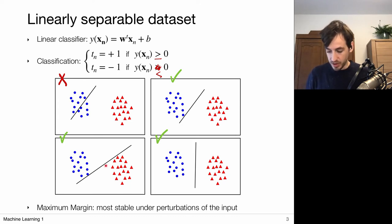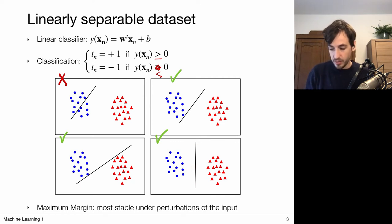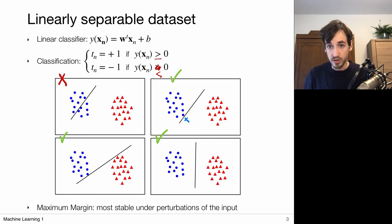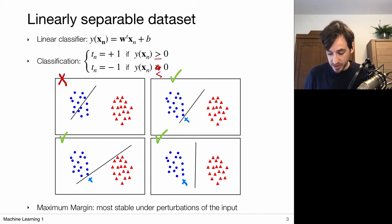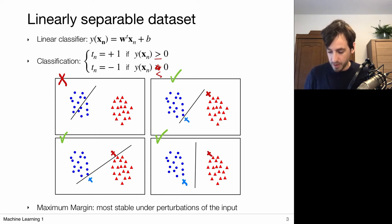One out of the three valid classifiers is better than the others — the one with the largest margin from the decision boundary to all other points. If a data point lies just outside its distribution, it may be incorrectly classified when the margin is small, but not when the margin is large. This tells us we want a decision boundary that is far away from all points — we want to maximize the margin between the decision boundary and the closest point in the dataset.